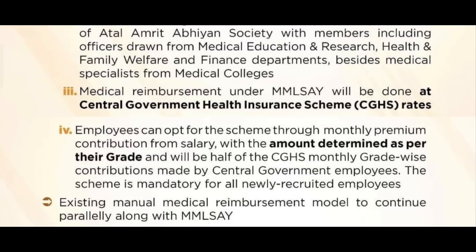Employees can opt into the scheme through monthly premium contributions from their salary. The premium is a deduction from your salary, structured grade-wise — Grade 4, Grade 3, Grade 2, Grade 1, Selection Grade — at half of the CGHS monthly grade-wise rate applicable to central government employees.